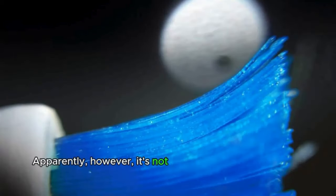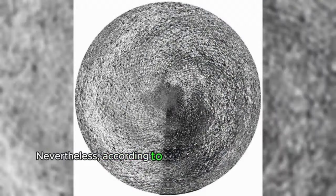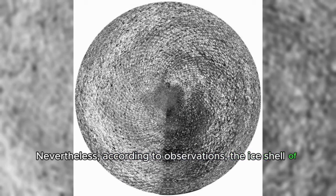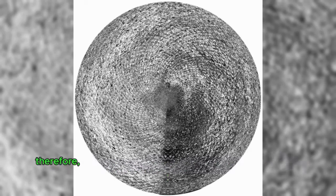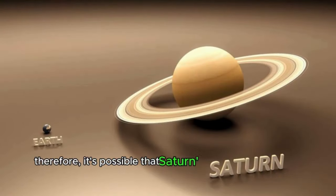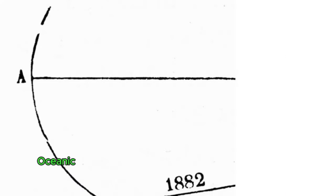Apparently, however, it's not enough to melt a thick layer of ice. Nevertheless, according to observations, the ice shell of Mimas began to thin after the appearance of a huge crater. Therefore, it's possible that Saturn's satellite may only be an incipient oceanic world.